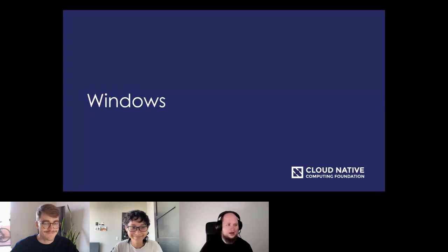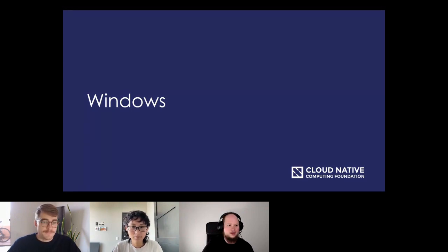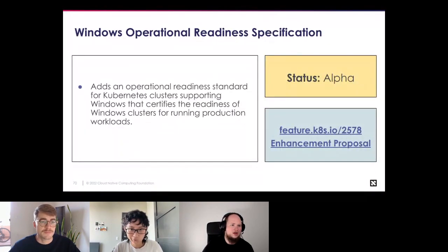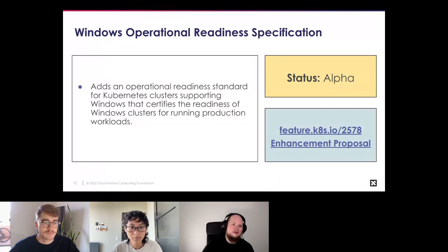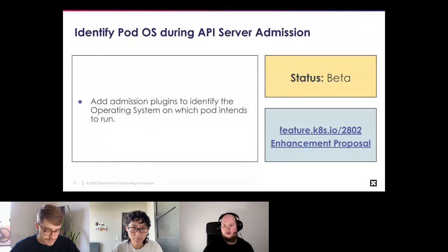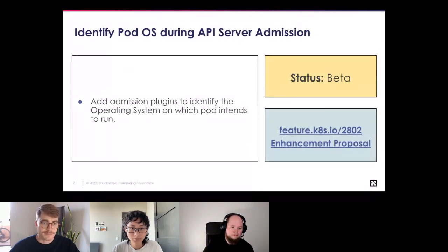SIG Windows deals with Kubernetes on Microsoft Windows. Operational readiness specification is a certification improvement to the end-to-end test suite, ultimately leading to greater confidence in running production workloads on Windows clusters and nodes. The final enhancement for Kubernetes 1.24 is identifying pod OS during API server admission — expressing which operating system a pod intends to run, enabling more effective scheduling decisions in clusters with mixed Windows and Linux nodes.